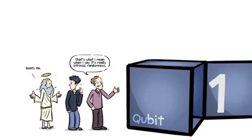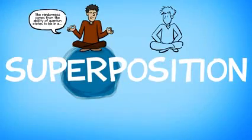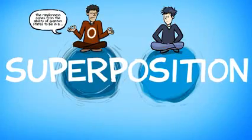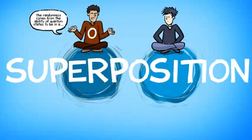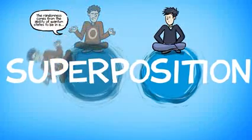Maybe it's a zero, maybe it's a one. The randomness comes from the ability of quantum states to be in a superposition. To be both in the state of zero, of definite, like, say, spin up or some particle, and also a spin down state.